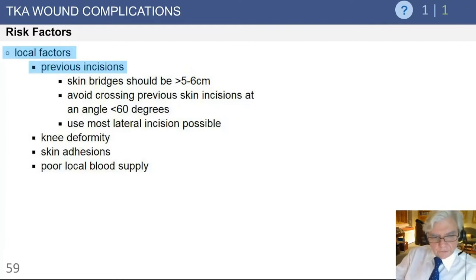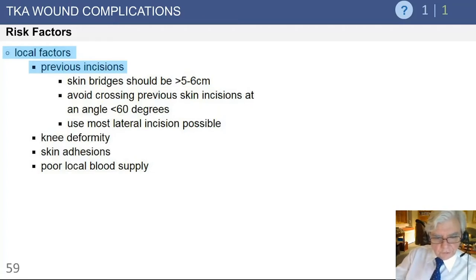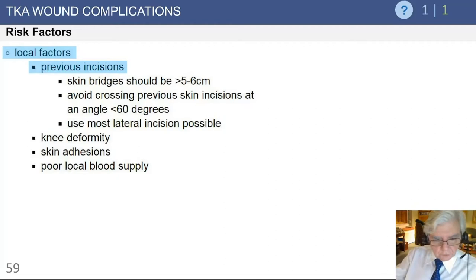Local factors are also important. Skin incisions and how you approach a knee that has had previous surgery are critical. We want to provide a skin bridge of particularly five to six centimeters if possible. If there is a previous incision that must be crossed, we do not want to create an angle of less than 60 degrees, because that resultant triangular segment of skin will be at risk for potential slough.